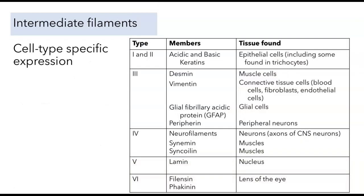Leaving aside the nearly ubiquitous lamins, let's turn to intermediate filament classes that do show tissue-specific expression. Some intermediate filaments are expressed only in cells of the nervous system. For example, neurofilaments are found in the axons of all central neurons — the neurons in the brain and spinal cord. Glial fibrillary acidic protein, GFAP, is found in glial cells. And peripherin is found in peripheral neurons.